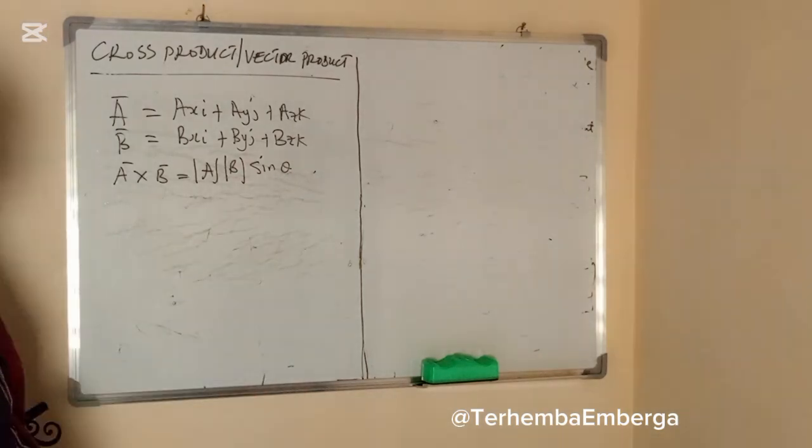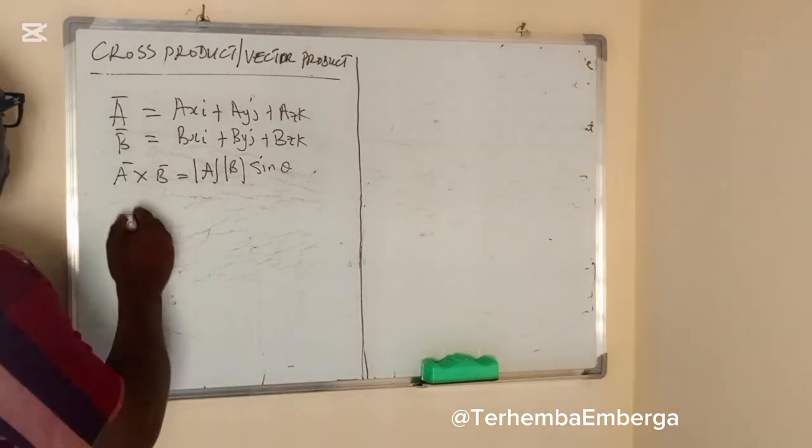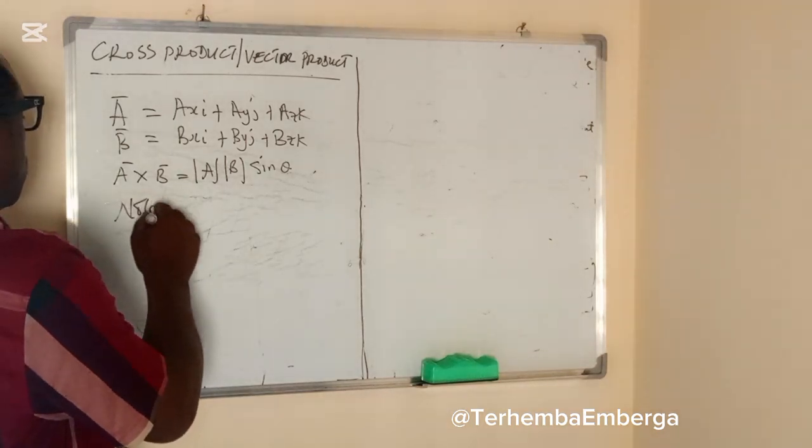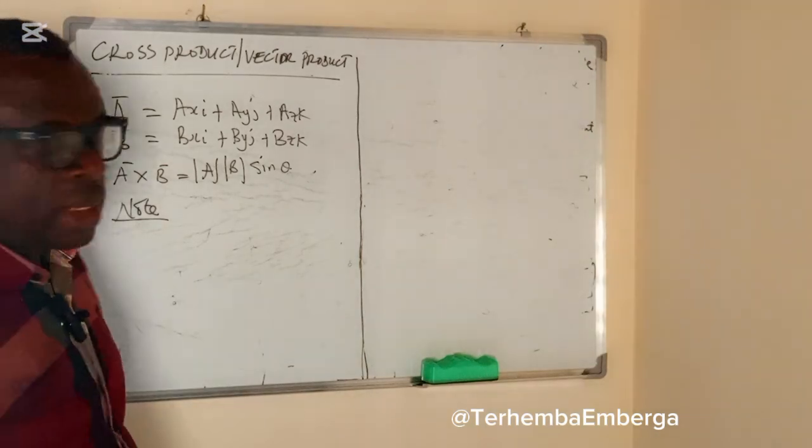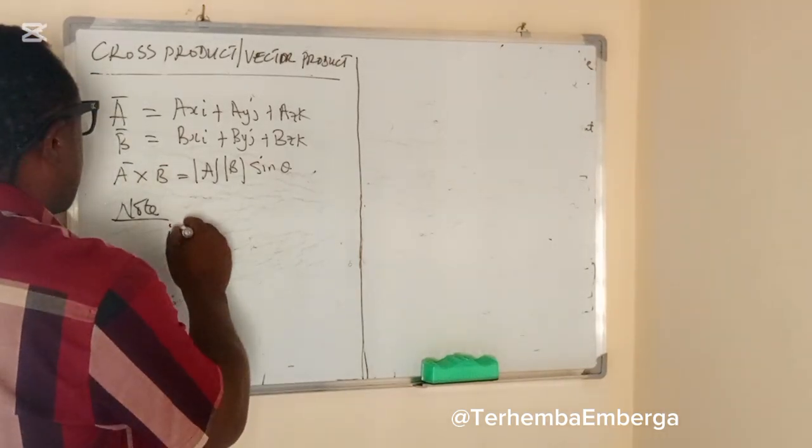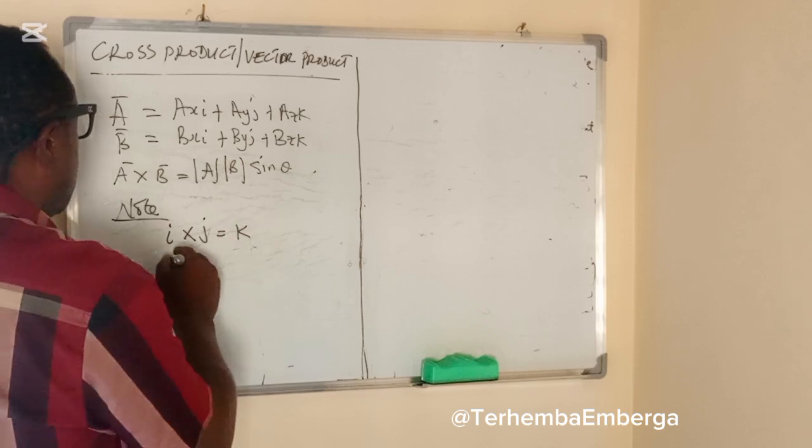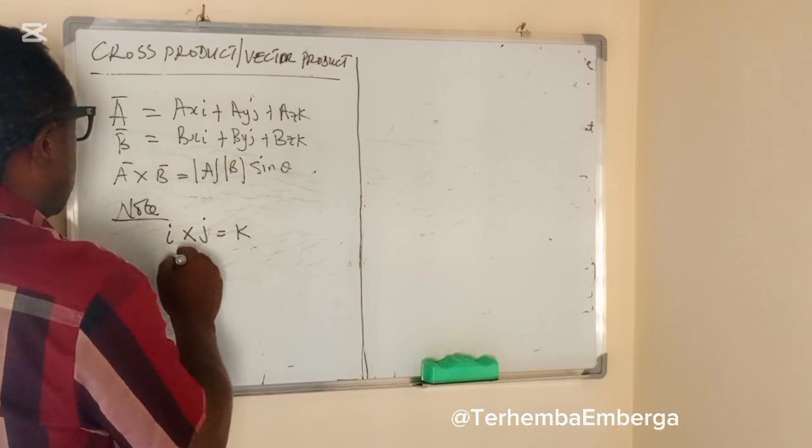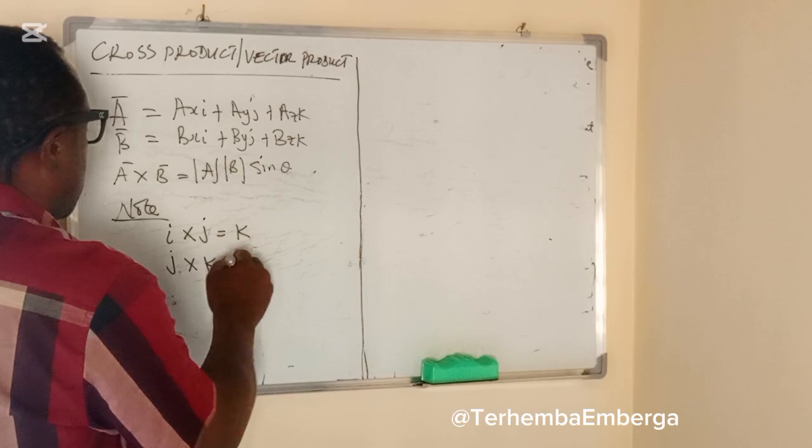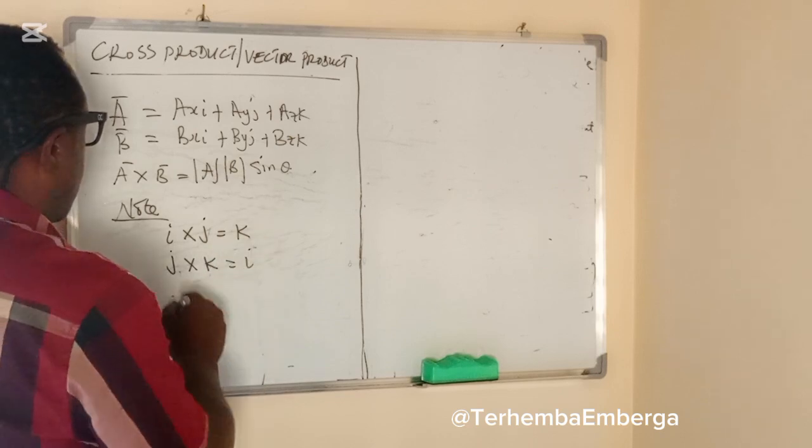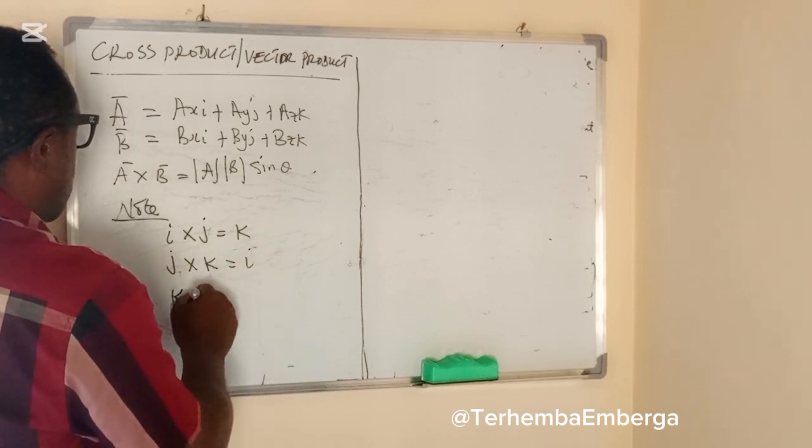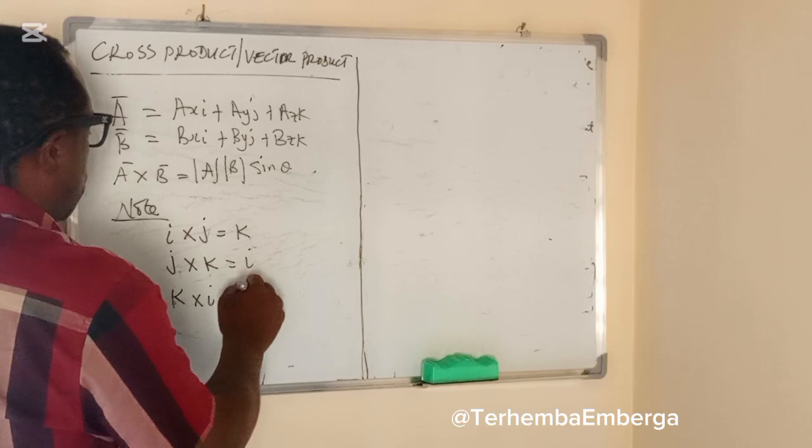Notice that I cross J is equal to K, J cross K is equal to I, and K cross I is equal to J.